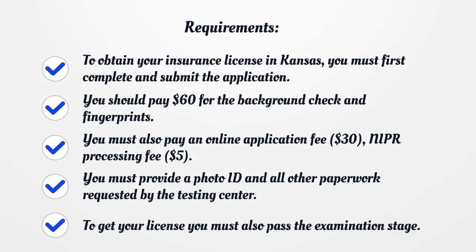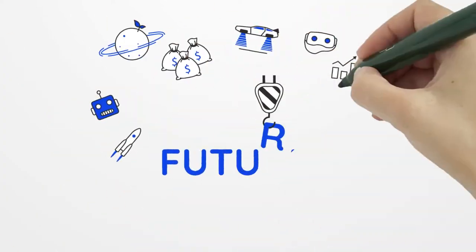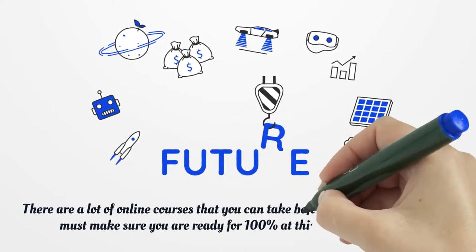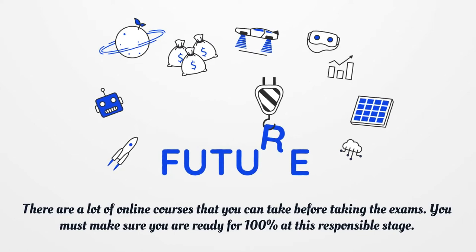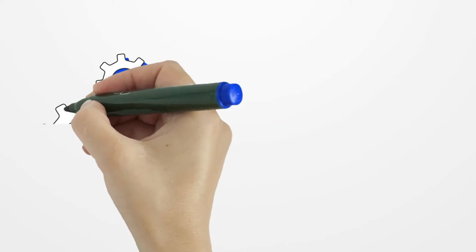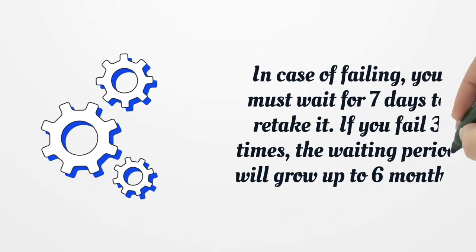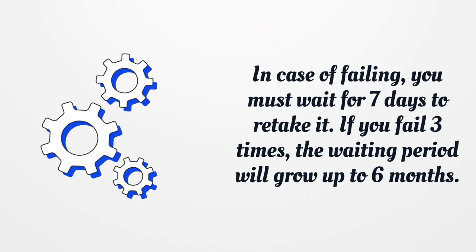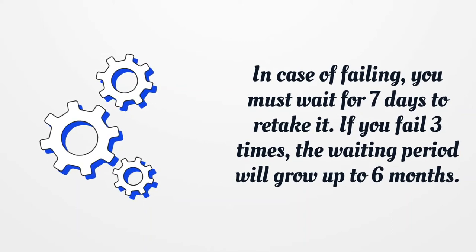To get your license you must also pass the examination stage. There are a lot of online courses that you can take before taking the exams. You must make sure you are ready for this responsible stage. In case of failing, you must wait 7 days to retake it. If you fail 3 times, the waiting period will grow up to 6 months.